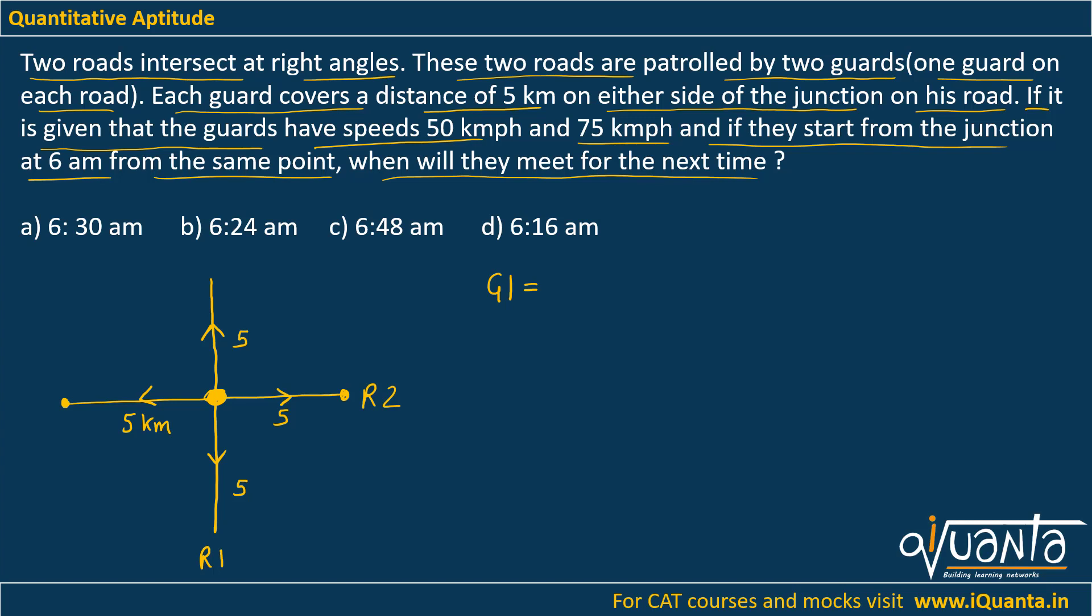Because 5 km he will go up and then 5 km he will come down. So 10 km in total and he will cover that distance at a speed of 50 kmph. So after how many minutes will he come to the junction? 10 by 50, that means 1 by 5 of an hour, which is 12 minutes.